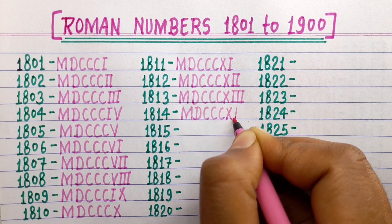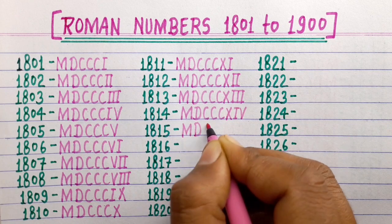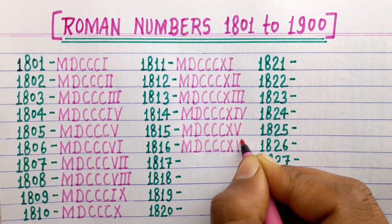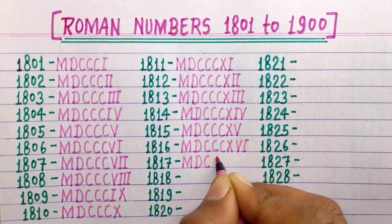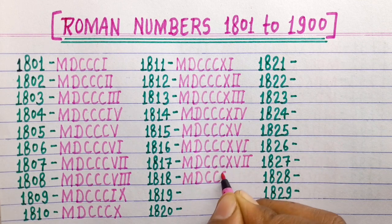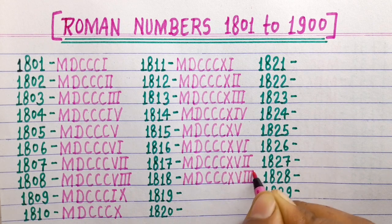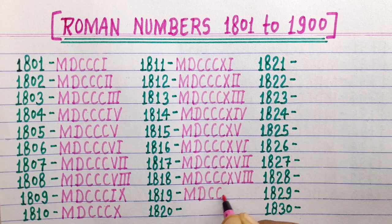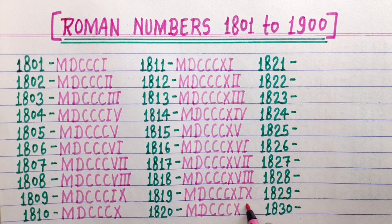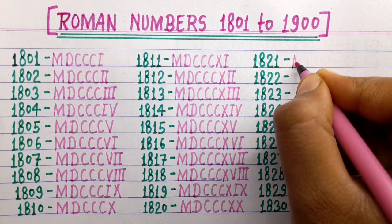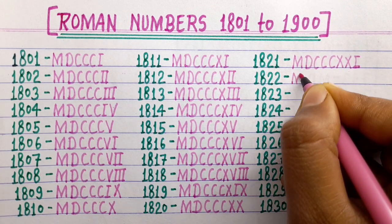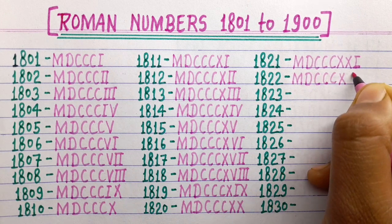1814 MDCCCXIV, 1815 MDCCCXV, 1816 MDCCCXVI, 1817 MDCCCXVI, 1818 MDCCCXVIII, 1819 MDCCCXIX, 1820 MDCCCCXX, 1821 MDCCCCXXI, 1822 MDCCCCXXII.